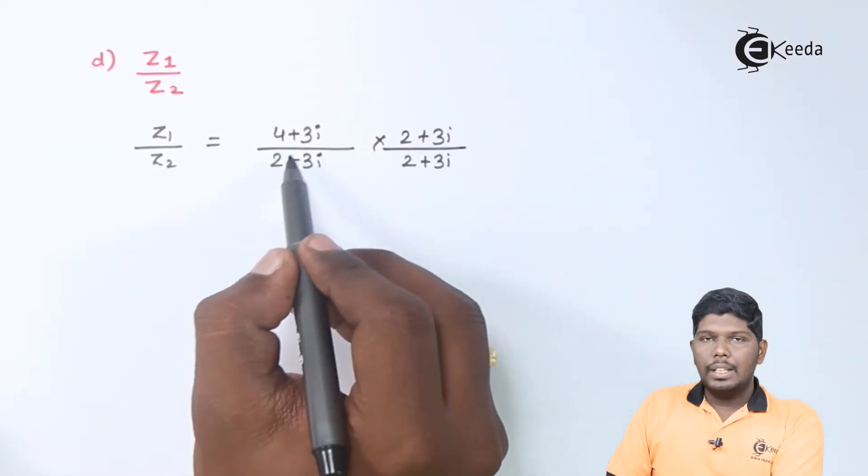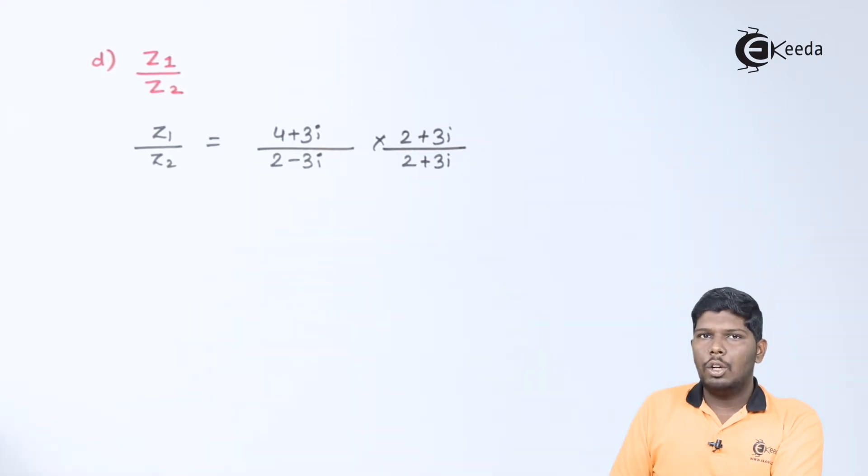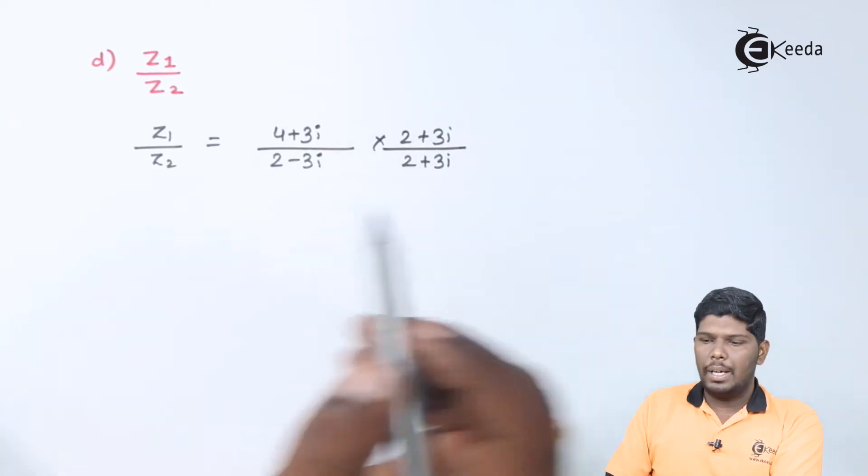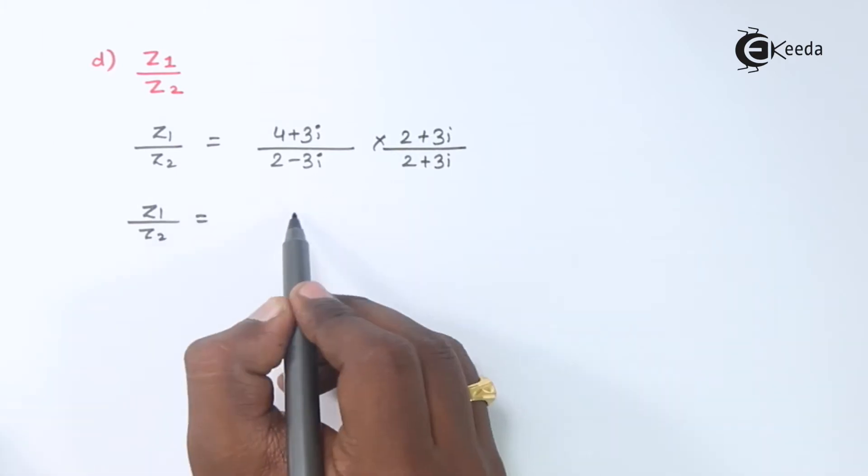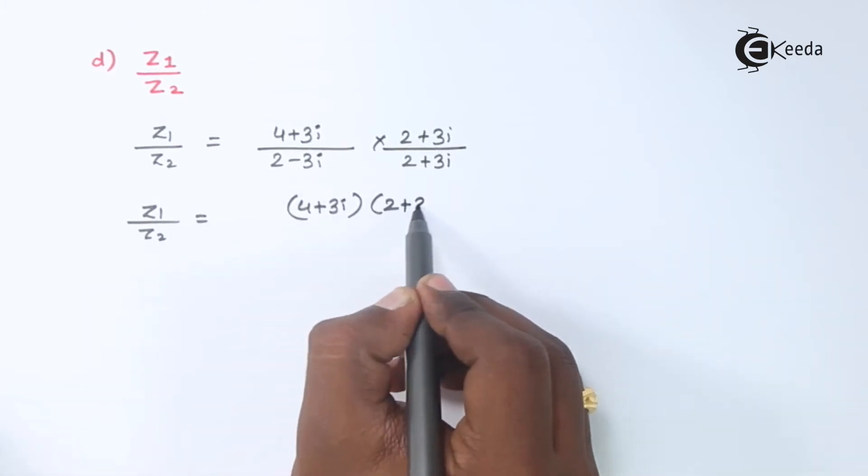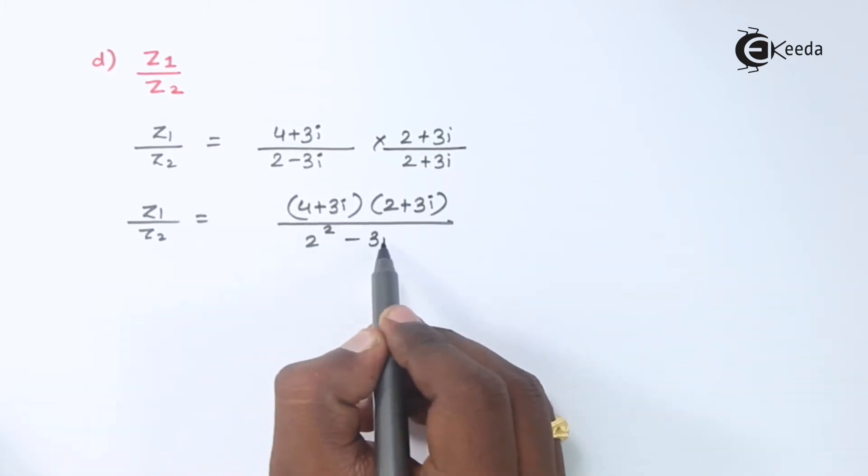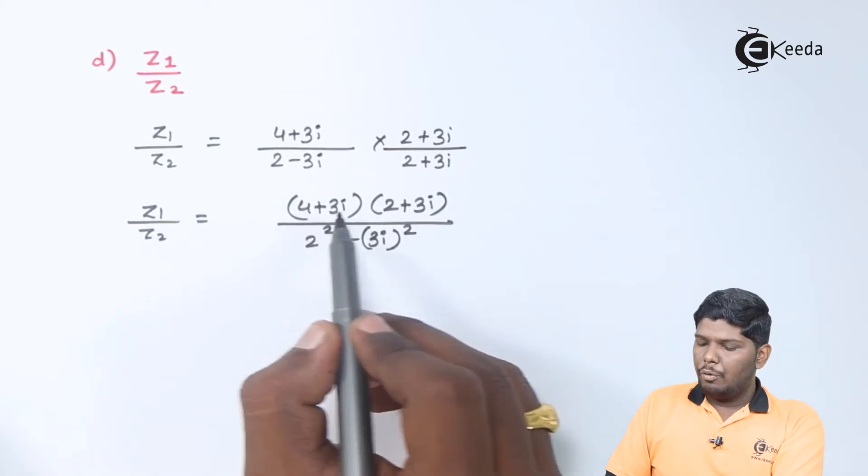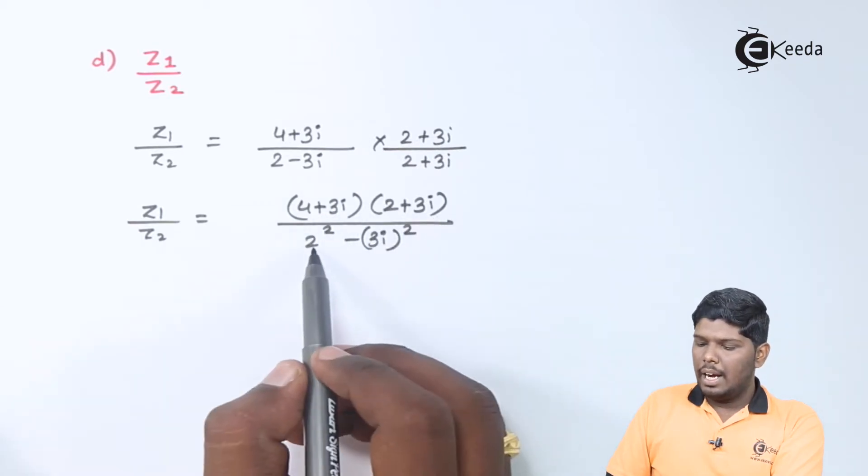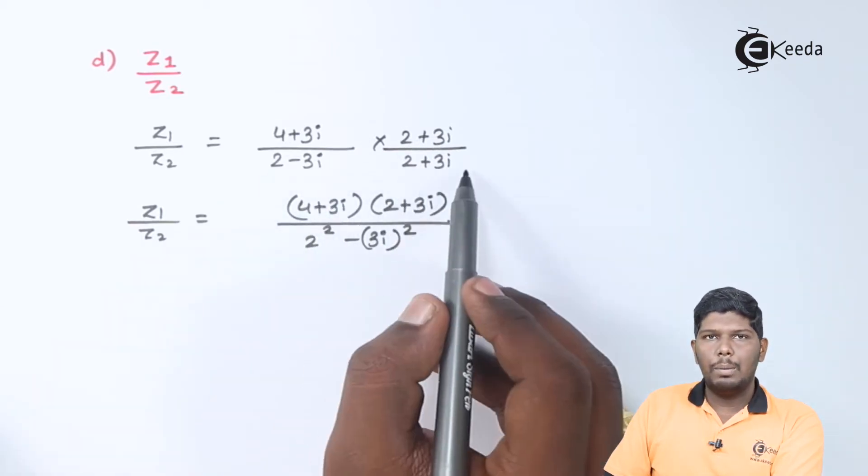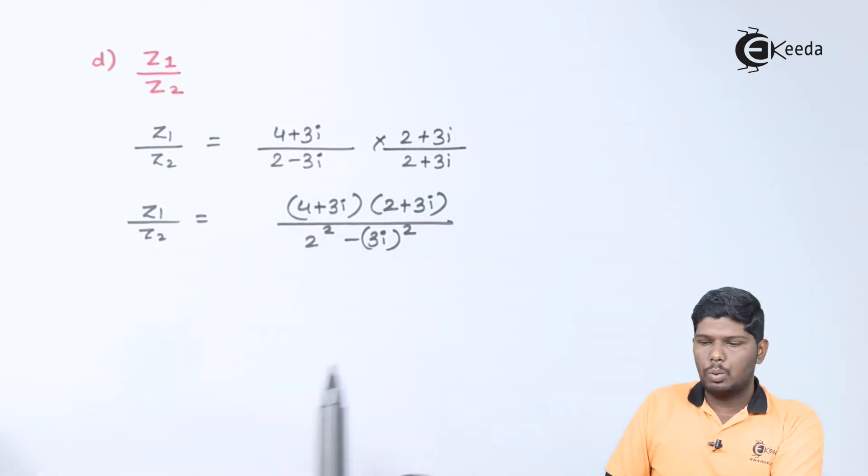The rationalizing factor will be obtained by changing the middle sign which is present in the denominator. That is, 2 plus 3i will be multiplied. In numerator, we have 4 plus 3i into 2 plus 3i. And in the denominator, we have a minus b into a plus b. That will give you a square minus b square.